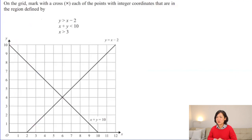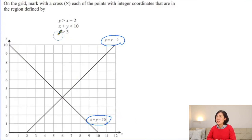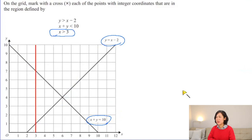Now let's try some questions. Here on the grid, mark with a cross each of the points with integer coordinates in the region defined by three inequalities. Luckily, all the straight lines are already drawn. Match each inequality to the right graph. One missing inequality is x is greater than 3. Quickly draw it — x equals 3 is a vertical line where regardless of y, all values of x equal 3.